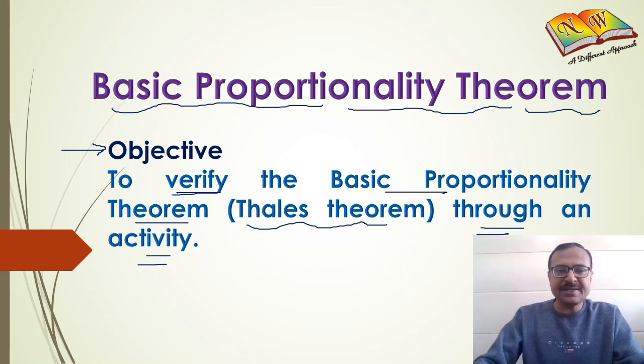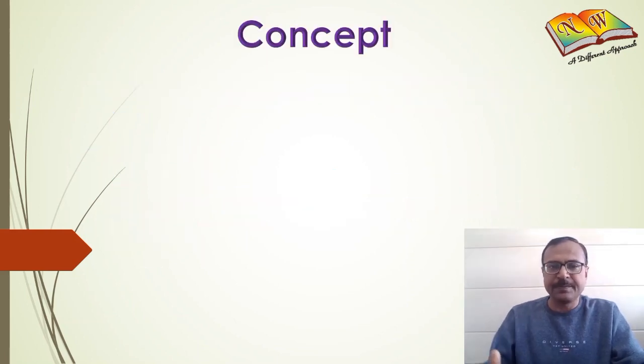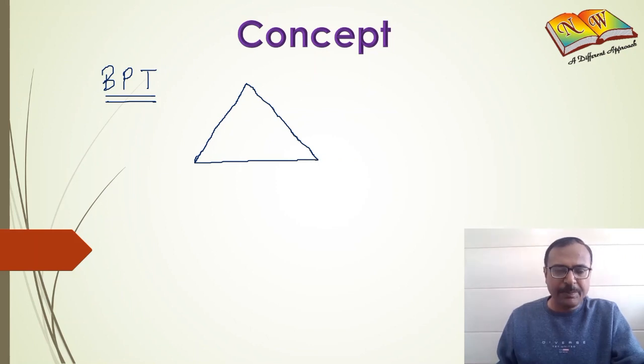Let's see the concept involved first. The Basic Proportionality Theorem or BPT states that whenever you have a triangle in which you draw a line parallel to one of the sides, if triangle ABC is given and we draw a line L parallel to side BC, then it intersects the other two sides AB and AC at two distinct points P and Q.